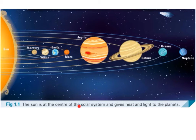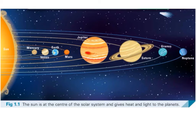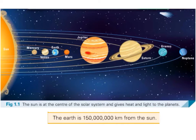The sun is at the centre of the solar system. The Earth is 150 million kilometres away from the sun. So it looks like a short distance in the picture, but it's actually 150 million kilometres away.